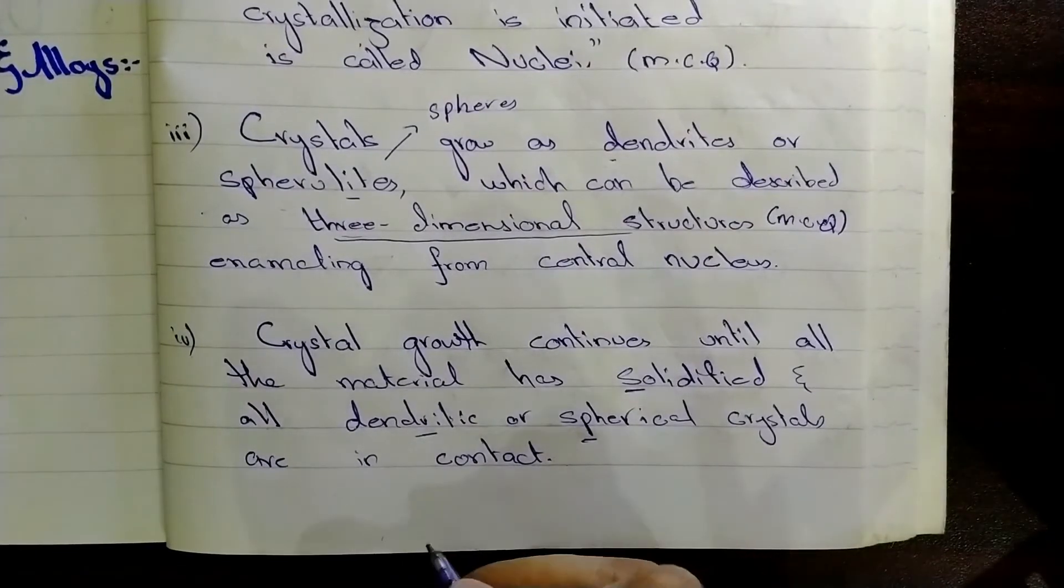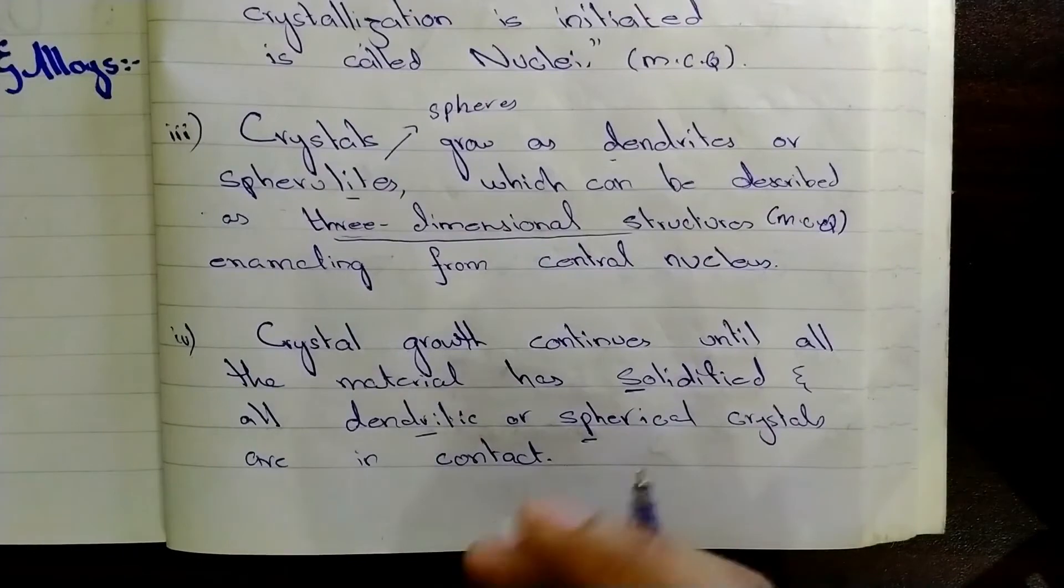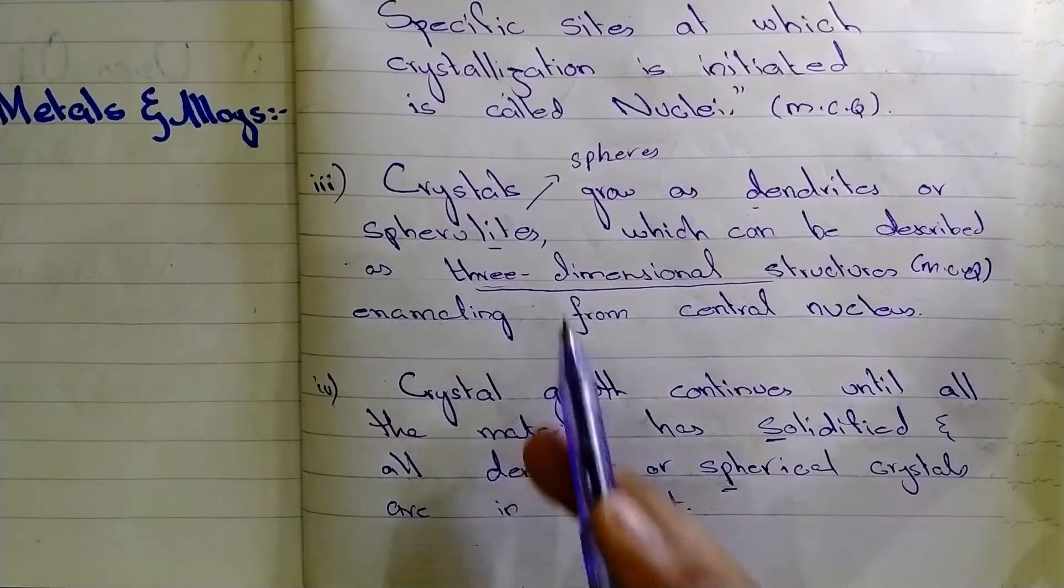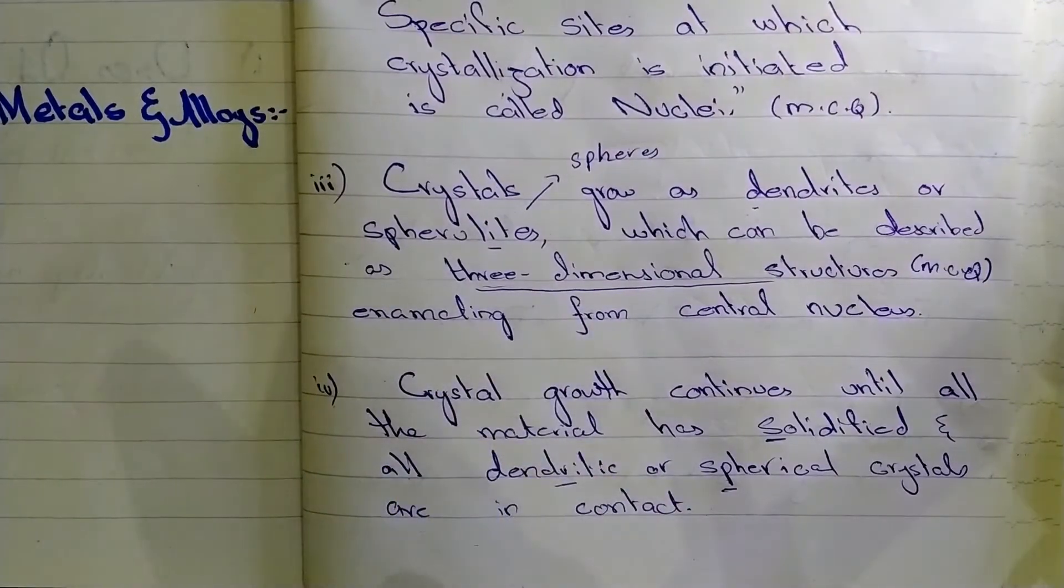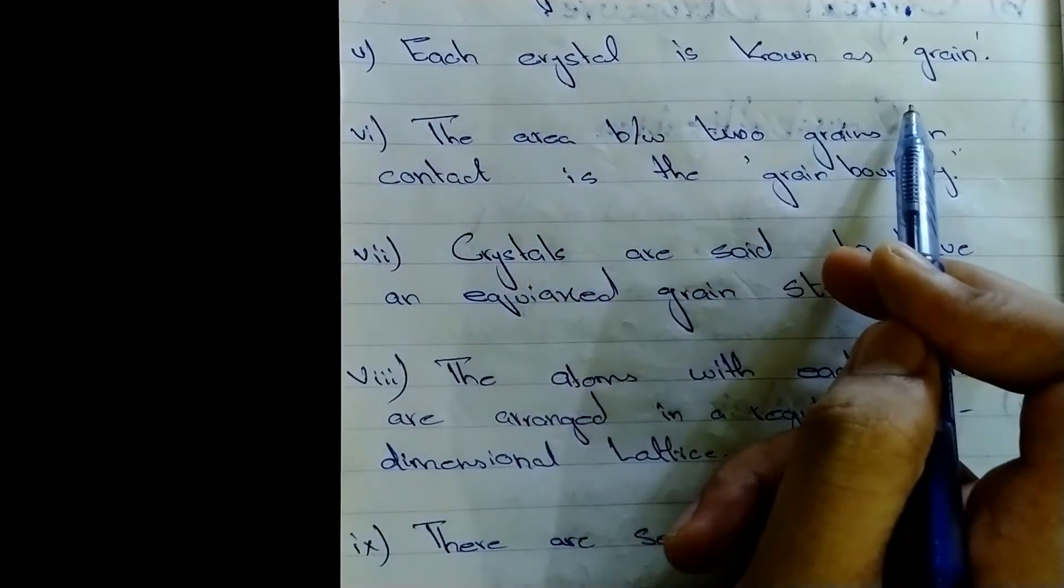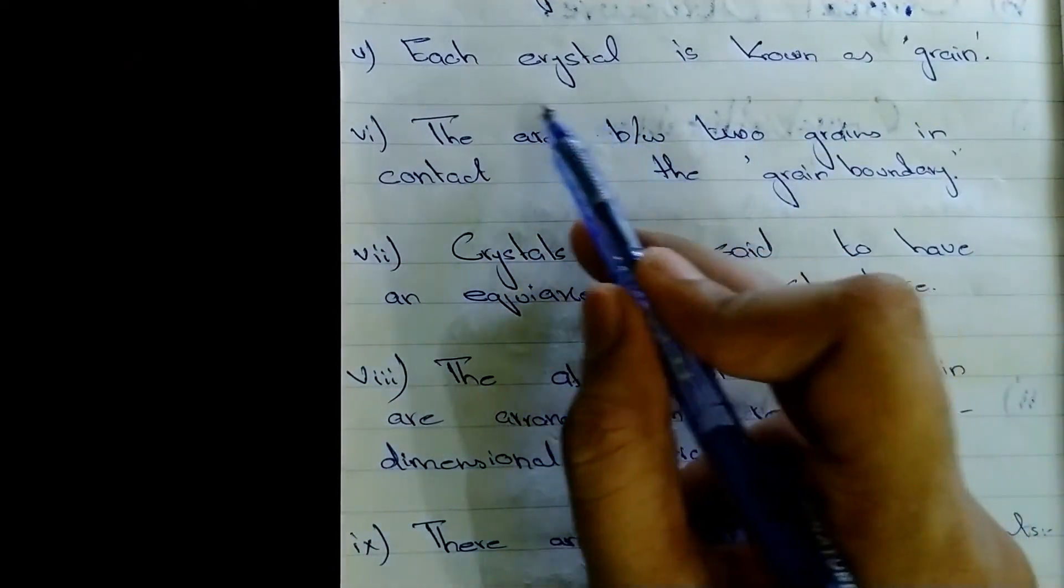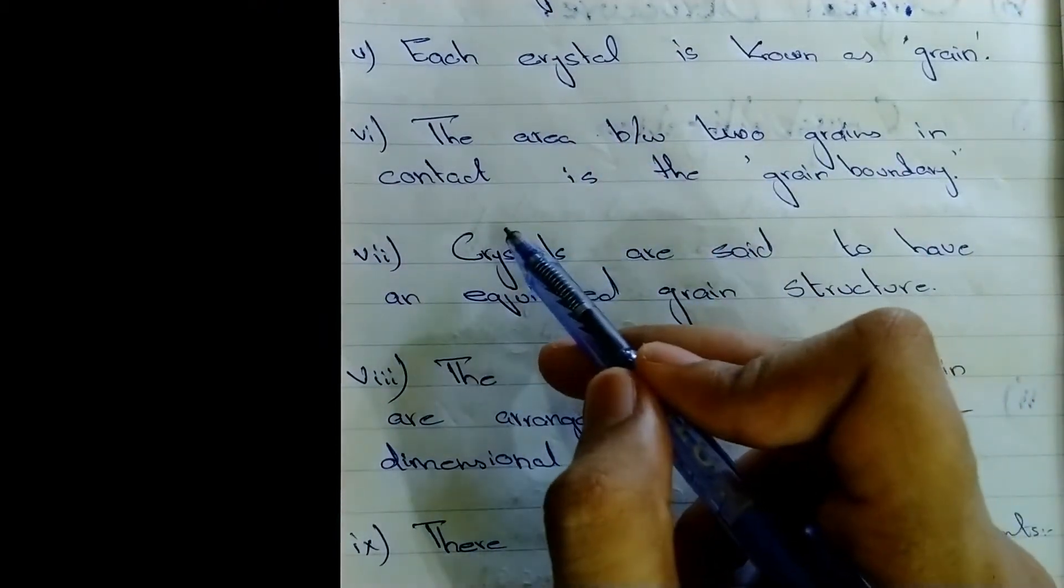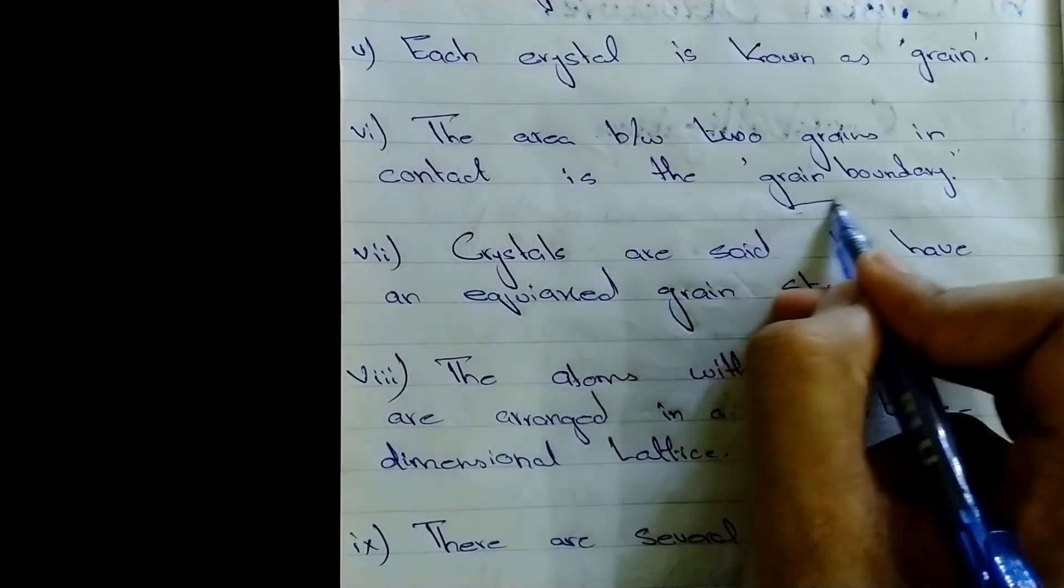to give a metal and crystal structure a compacted structure. I will tell later in the video diagrammatically how crystals grow. Each crystal is known as grain and the area between two crystals or two grains in contact is the grain boundary.